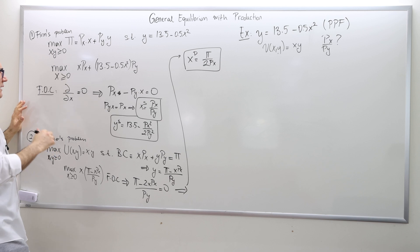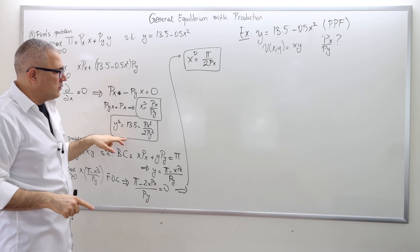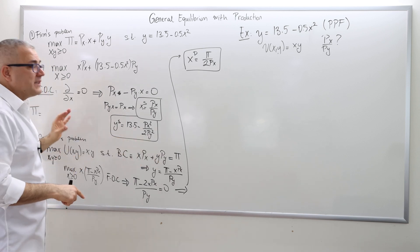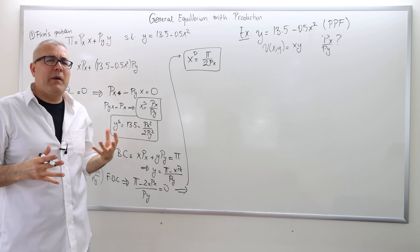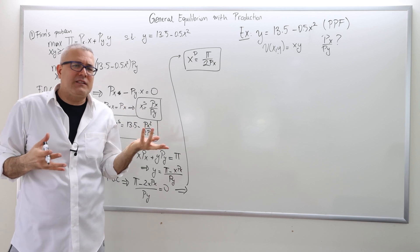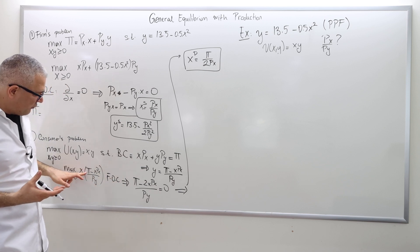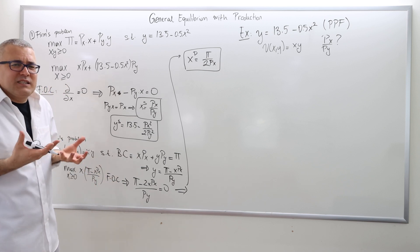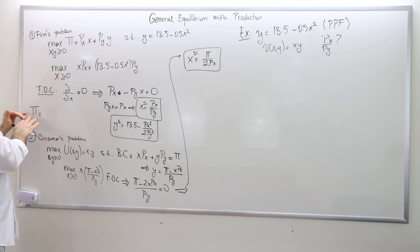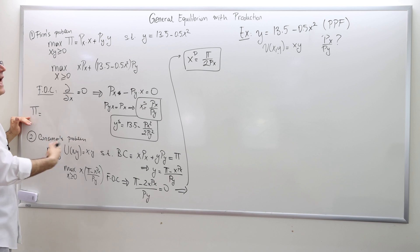I should have first calculated the profit once I found the optimal supply for good X and good Y, and then plugged it in here. It doesn't change anything, mainly because the profit does not depend on X or Y — it's just a function of PX and PY. So the derivative of π alone is zero since π is a constant. Nevertheless, I should have calculated π first to confirm it doesn't depend on X and Y, and then proceed.